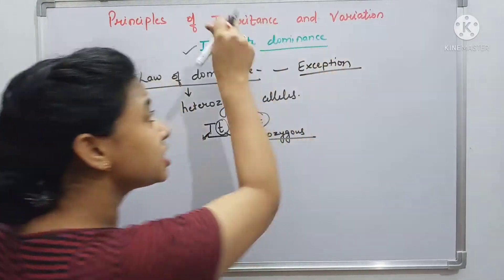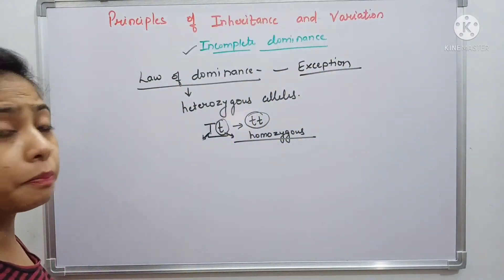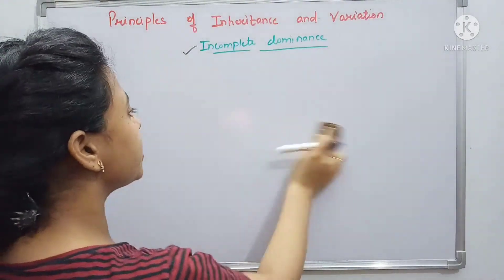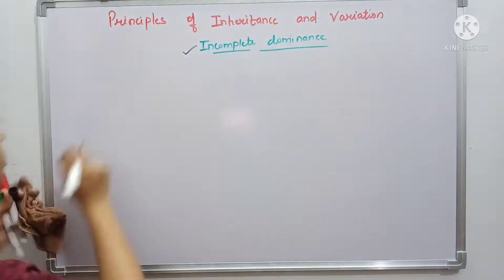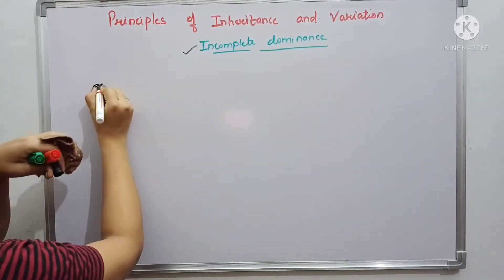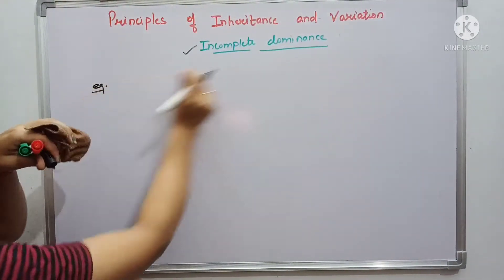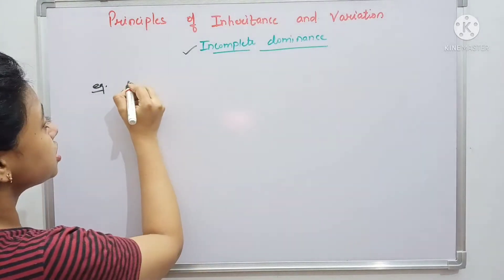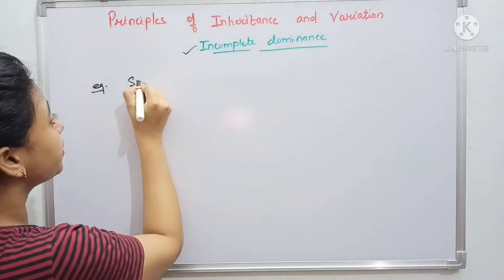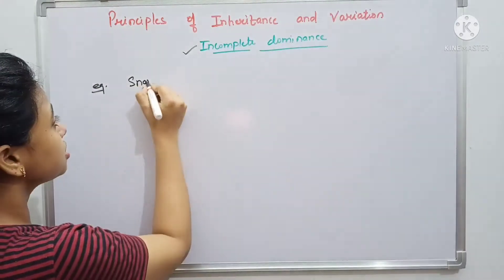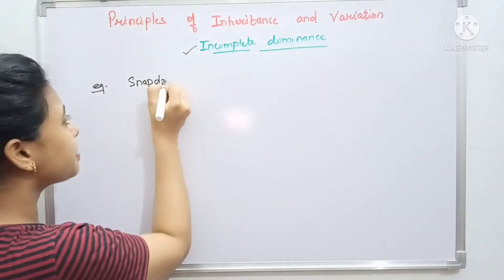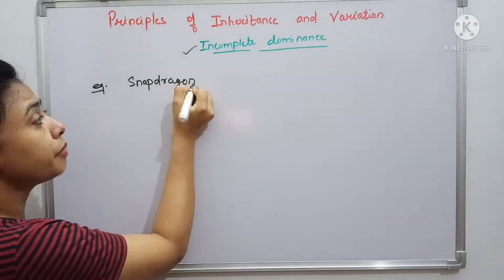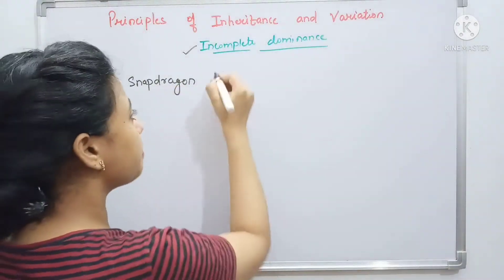Now, coming from this law of dominance, we will look at some exceptions. The first example is the snapdragon plant — it is a very famous example and comes up in exams many times.